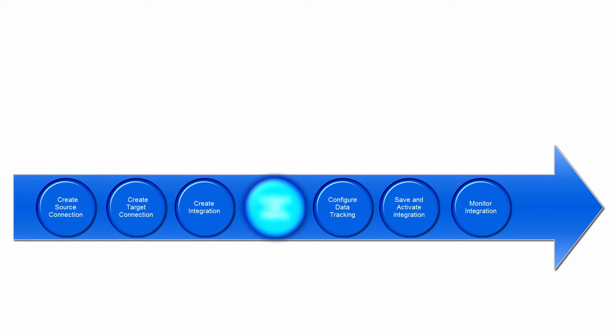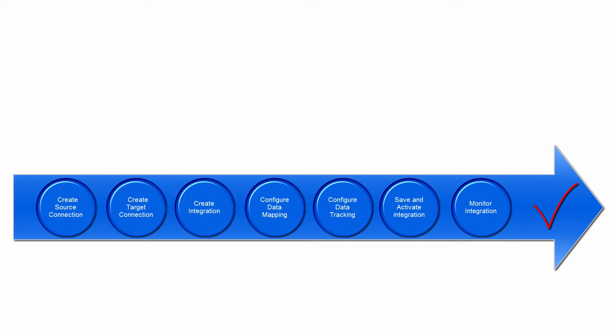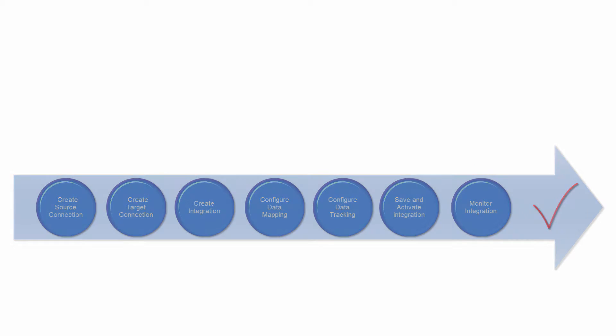The steps are: create source connection, create target connection, create integration, configure data mapping, configure data tracking, save and activate the integration, and monitor integration for new messages.